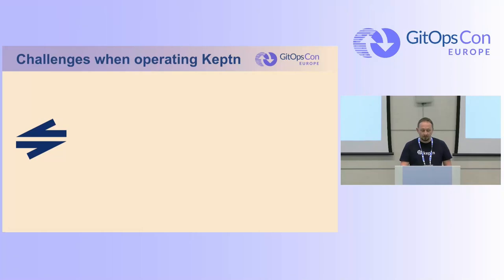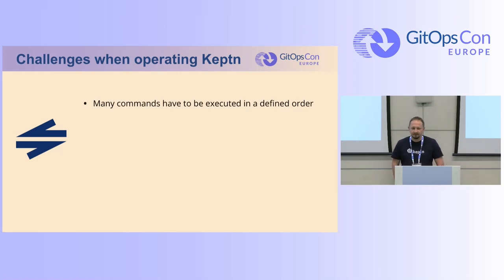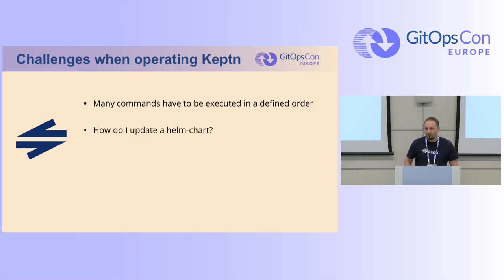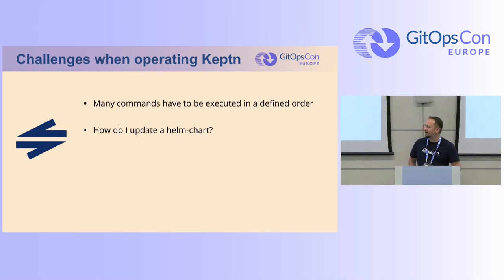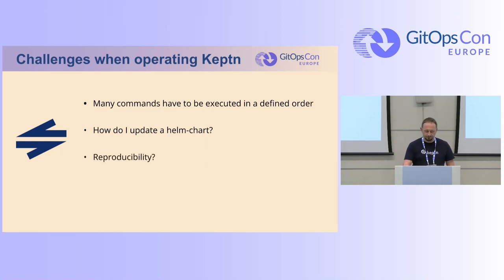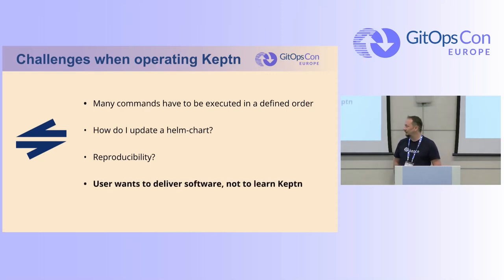What were the user challenges until now when operating Captain? Captain is based on imperative commands, so users had to execute many commands in a defined order, as we know from imperative tools. Often they asked themselves how to update a Helm chart, because Captain has an artifact store and you have to upload the configuration. Furthermore, the configuration was sometimes not really reproducible. Users want to deliver software, not to learn Captain.